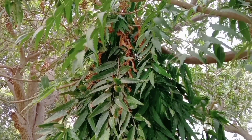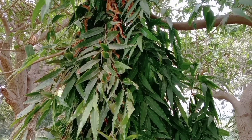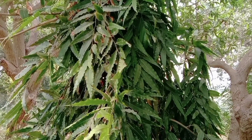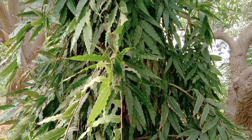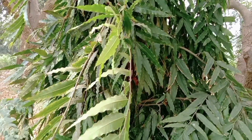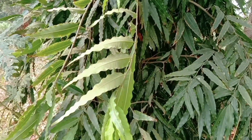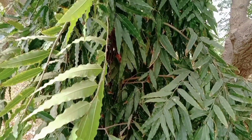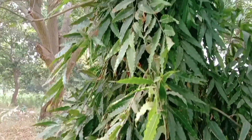Fertilization of Polyalthea longifolia: Fertilization occurs through the transfer of pollen from the male reproductive organs (anthers) to the female reproductive organ (stigma) of the same or another flower. This process is typically facilitated by insects such as bees and butterflies, which carry the pollen from one flower to another.